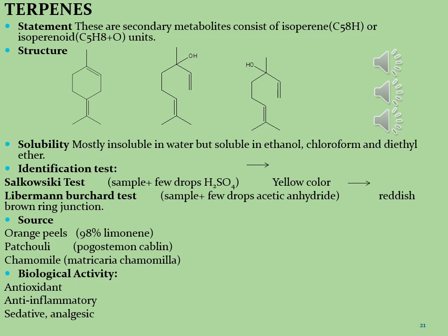Linalool-rich strains are likely to have a calming effect and to provide pain relief, while limonene-rich strains are likely to be mood-elevating agents. Terpenes are the major components of rosin and turpentine produced from resins. The name terpene is derived from the word turpentine. Terpenes are also natural building blocks of steroids.